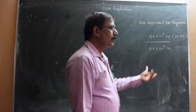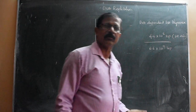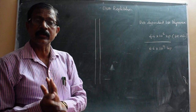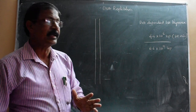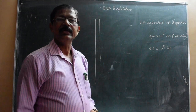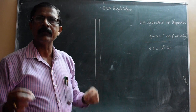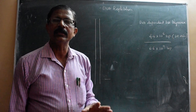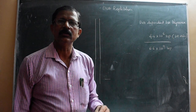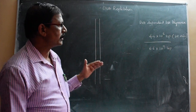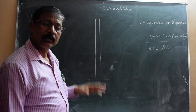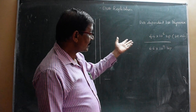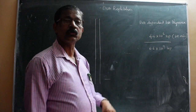In human beings the process may be slower because humans divide every 24 hours once, whereas bacteria replicate within 30 to 40 minutes. In bacteria it is a very, very quick process and within 30 to 40 minutes the process of division completes - meaning within that time the replication should complete. Just imagine: 4.6 × 10⁶ base pairs must be replicated within 38 minutes.